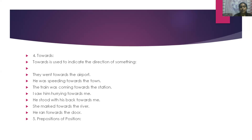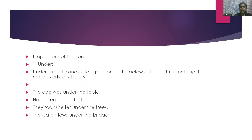The next type is preposition of position. The first word is 'under'. Under is used to indicate a position that is below or beneath something — it means vertically below. For example: the dog was under the table. He looked under the bed. They took shelter under the trees. The water flows under the bridge.